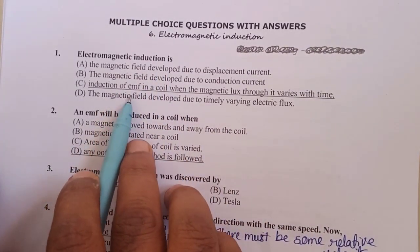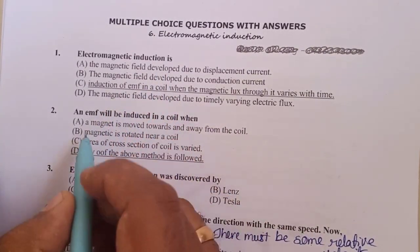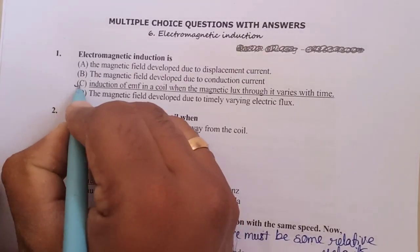Electromagnetic induction is the induction of EMF in a coil when the magnetic flux through it varies with time.